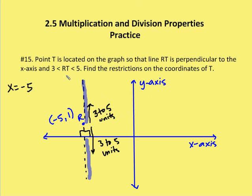Then I'm also told that RT is between 3 and 5 units. So all I need to do now is count up 3 to 5 units from point 1, and then down 3 to 5 units from negative 5, 1. So as I count up, I know that the y-value has to be 1 plus 3, between 1 plus 3 and 1 plus 5, or between 4 and 6. So the x-coordinate is going to be negative 5, and then the y-coordinate will be between 4 and 6.